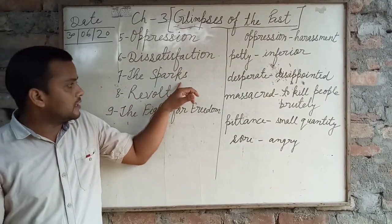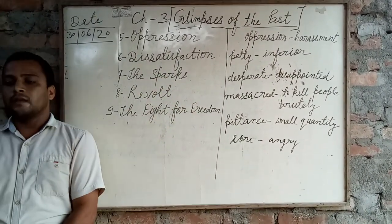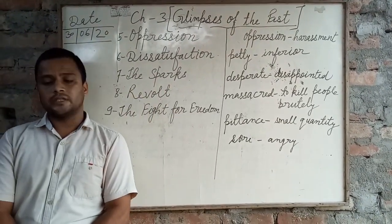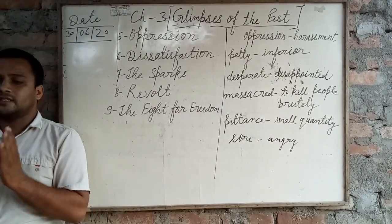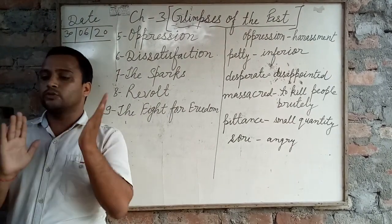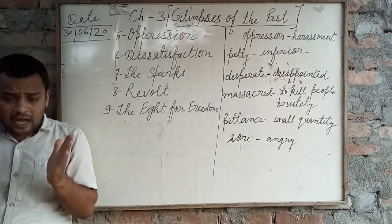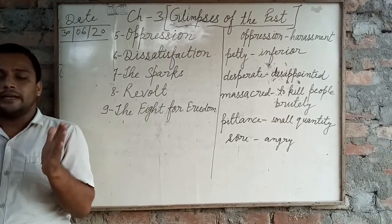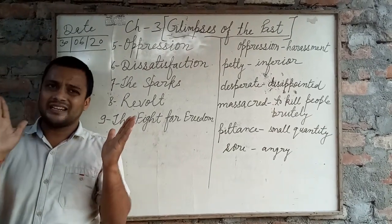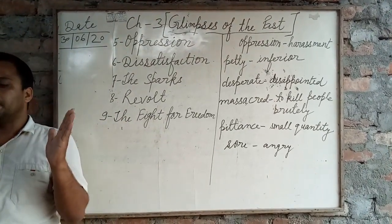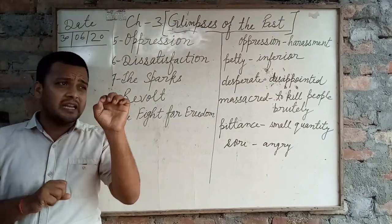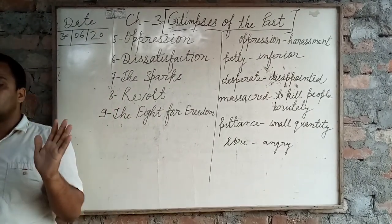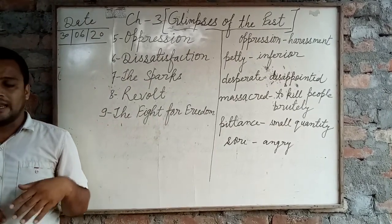Now see the next point at page number 42 — The Sparks. The British continued to exploit India. Heavy taxes continued to destroy the farmers. The farmers who were inhabitants of Bengal started a rebellion and killed Europeans and their supporters brutally in 1855, because they had lost their lands.